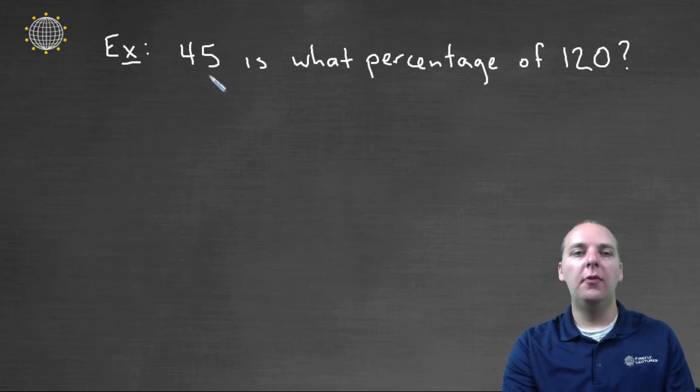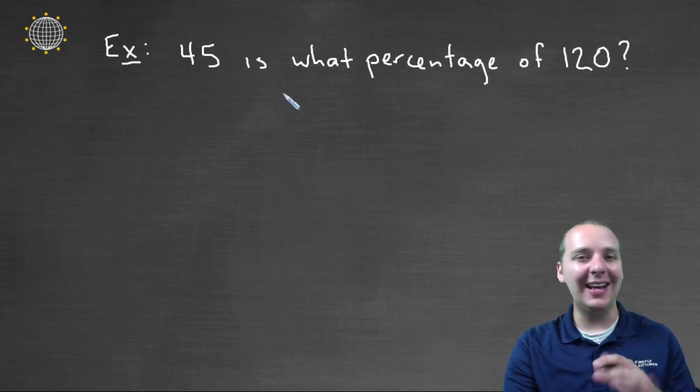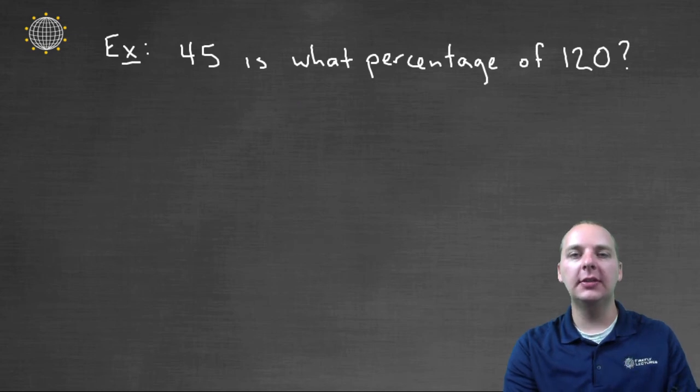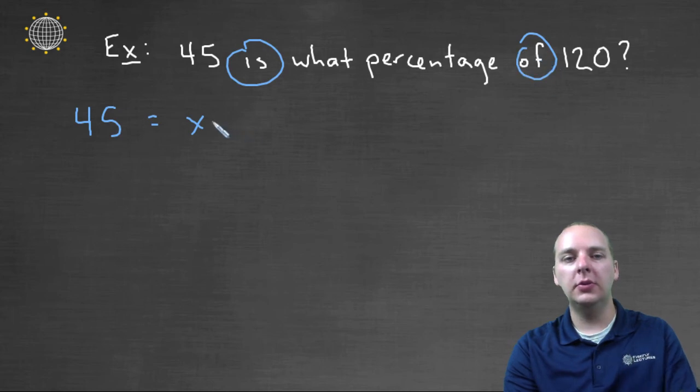Here's another one. Forty-five is what percentage of a hundred and twenty? I have no idea. I know it is a percentage of a hundred and twenty, it's less than a hundred and twenty. I might can guess, but I'm not sure exactly what that percentage is. So let's translate this into a math equation. We have forty-five is, which is equals, what percentage, that's a value that I don't know, so I'll write it as x, of a hundred and twenty, so we'll put times one twenty. So we'll divide both sides by one twenty to solve for x.